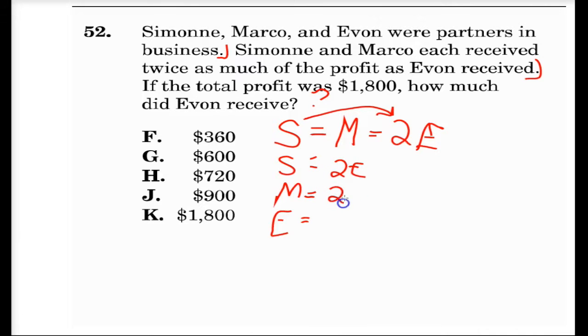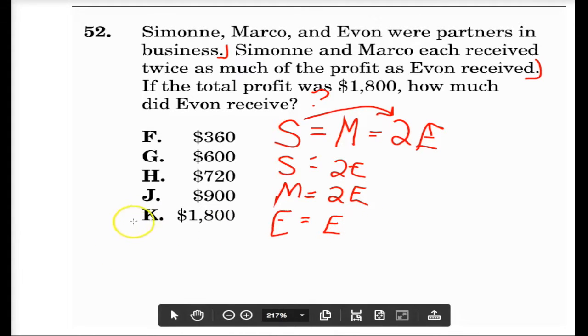Marco equals two times Evan. And here's the part kids often forget because it seems ridiculous, but don't forget that Evan equals Evan. So now we have a potential equation because we'll keep reading some more.